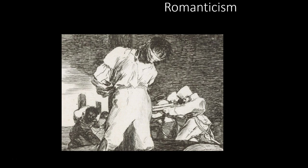The first group of prints, to which Y no hay remedio — There's Nothing to Be Done — belongs, shows the sobering consequences of conflict between French troops and Spanish civilians. The second group documents the effects of a famine that hit Spain in 1811–1812 at the end of French rule. The final set depicts the disappointment and demoralization of the Spanish rebels, who after finally defeating the French found that their reinstated monarchy would not accept any political reforms.